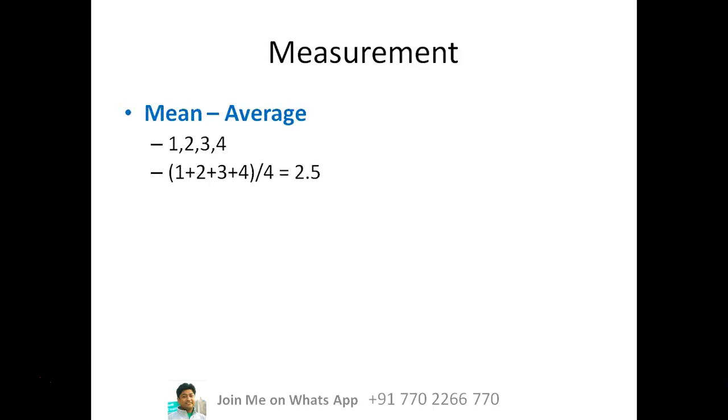The most common is the mean. So suppose you have a set of values 1, 2, 3, 4 and you want to understand what is the center of this particular value. So you take an average of it. So 1 plus 2 plus 3 plus 4 divided by 4 is 2.5. So this becomes the mean of the particular set of values.